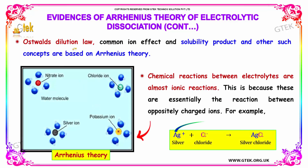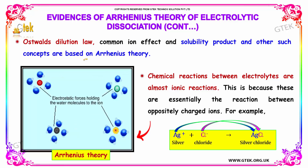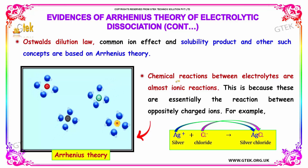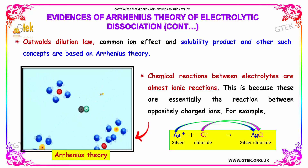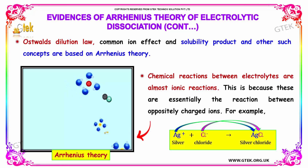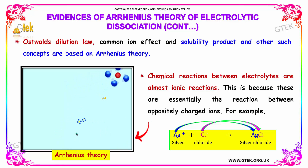Ostwald's dilution law, common ion effect, solubility product, and other such concepts are based on Arrhenius theory. Chemical reactions between electrolytes are almost ionic reactions, because these are essentially the reactions between oppositely charged ions.